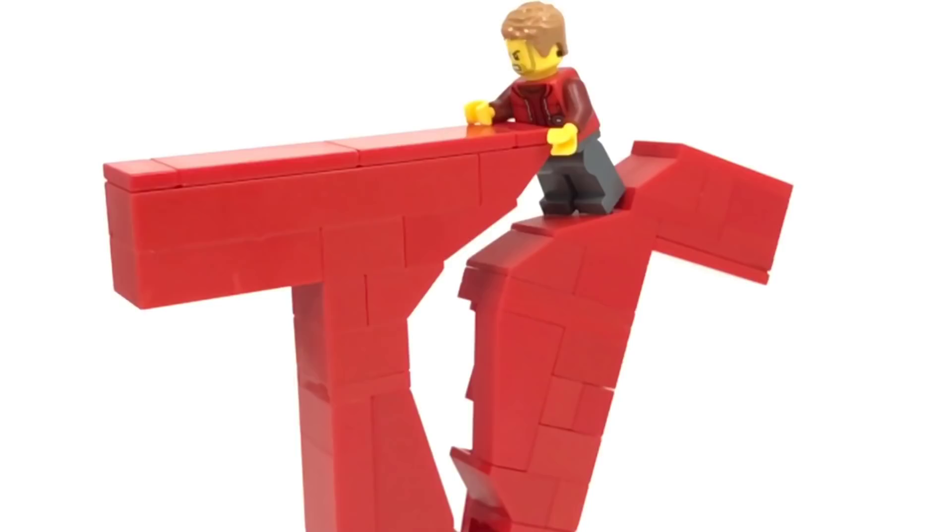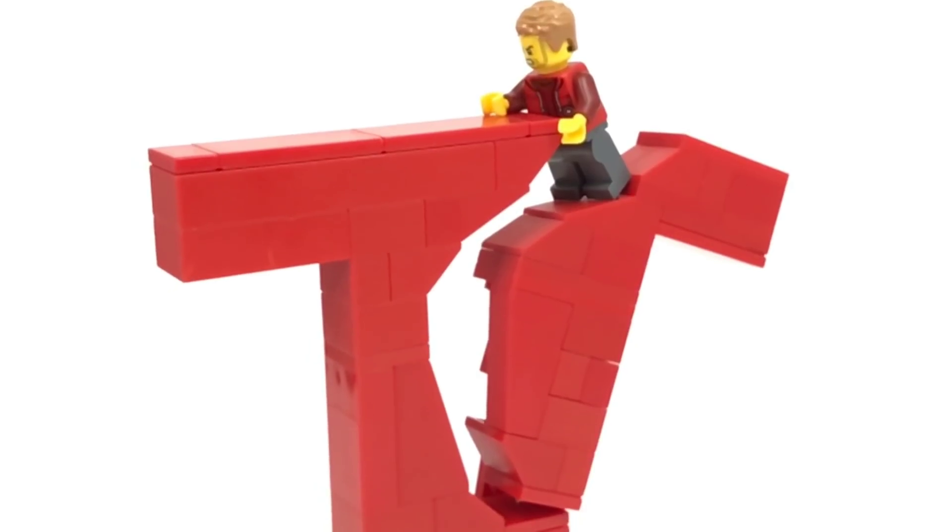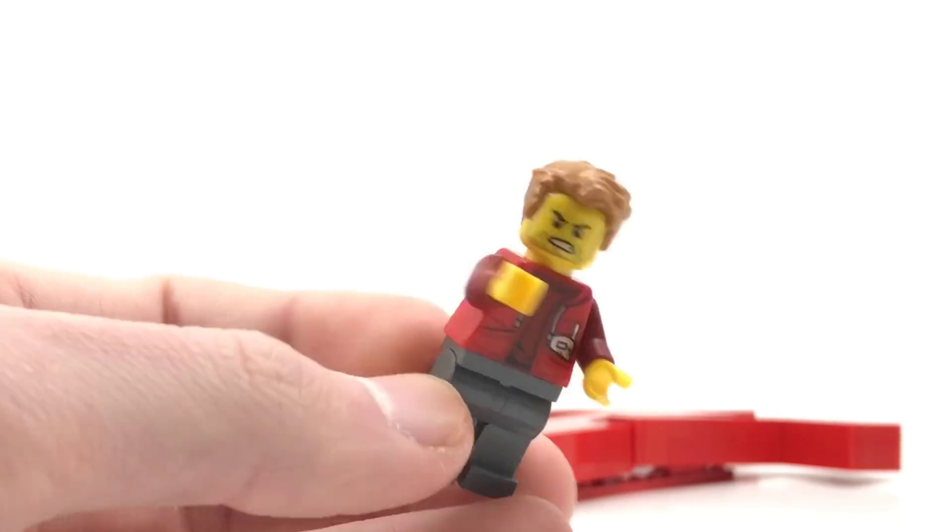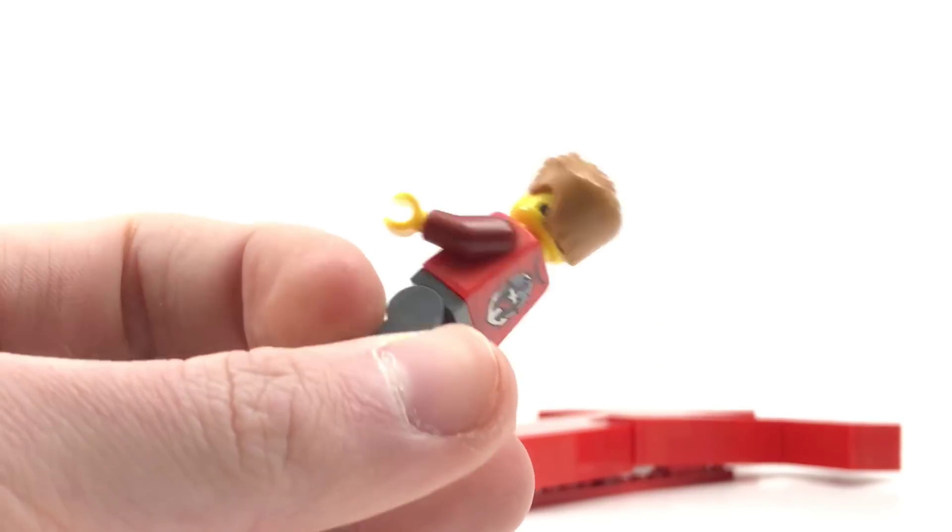So that's why I made this breakable T-Series logo out of Lego. You can see the T-Series T being split open by none other than Pewdiepie himself, although it doesn't really look like Pewdiepie. I tried many different ways I could make the minifigure but I could never get it to look right.